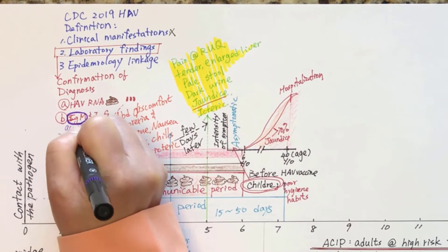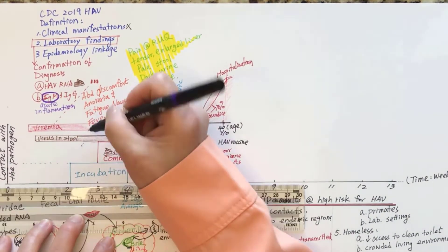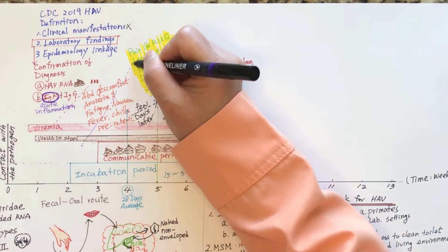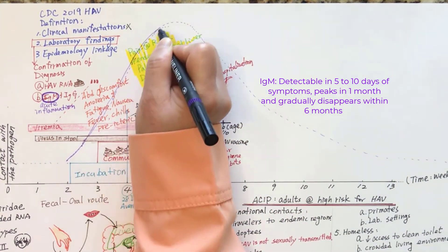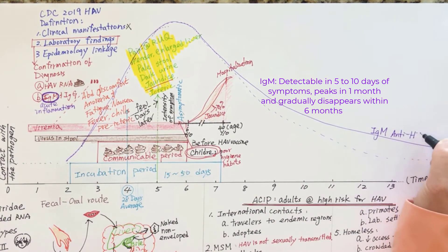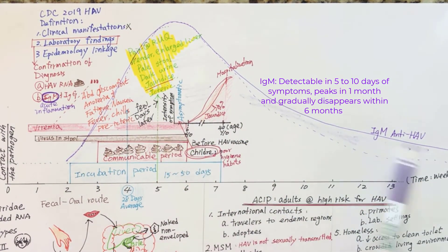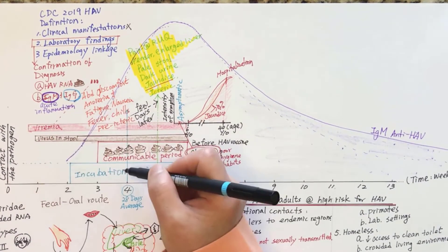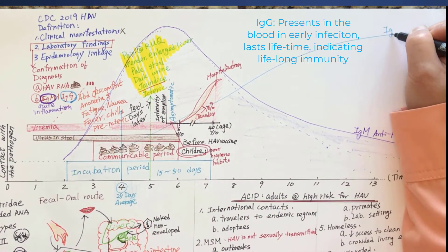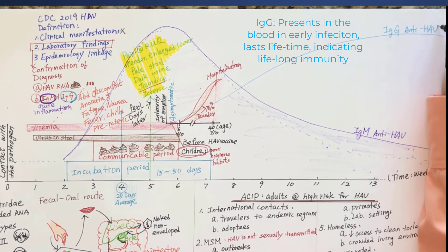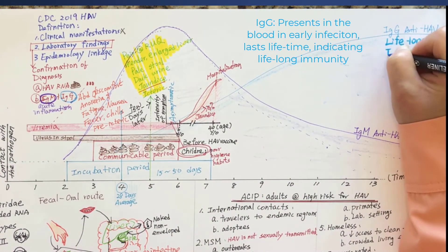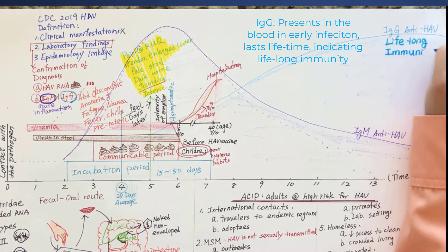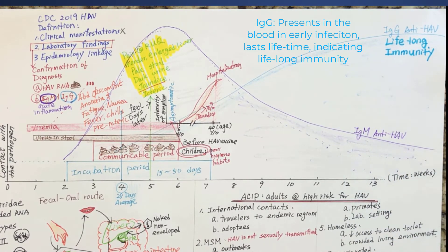The other laboratory marker for acute hepatitis A infection is IgM anti-hepatitis A antibody. IgM anti-hepatitis A antibody can be detected within five to ten days of symptoms, peaks in about a month, then gradually decreases to undetectable in about six months. The other serologic marker is IgG anti-hepatitis A antibody, which presents in the blood during the early stage of infection and lasts a lifetime, indicating lifelong immunity to hepatitis A.